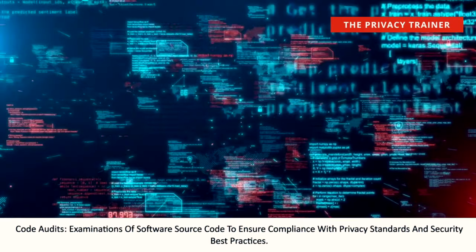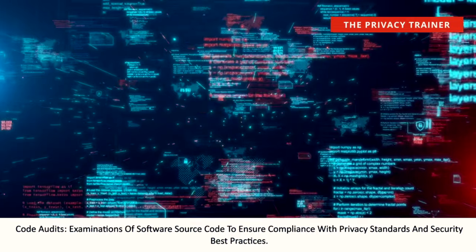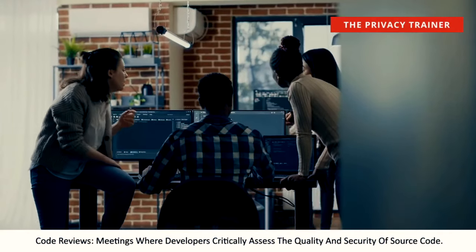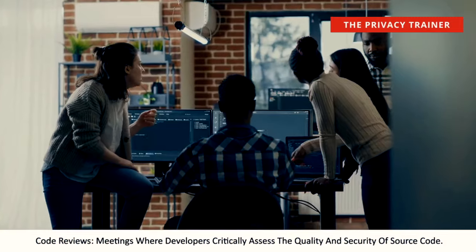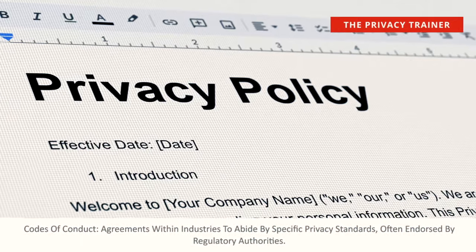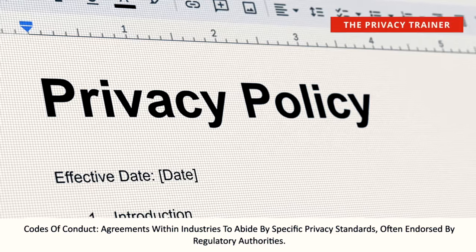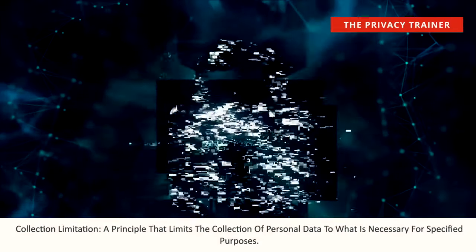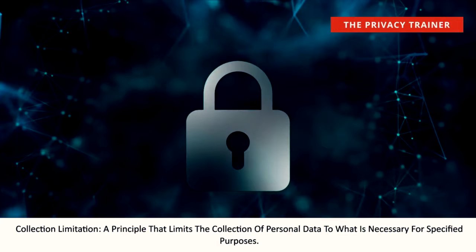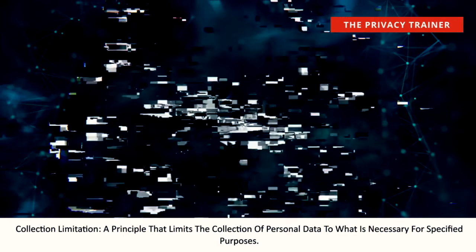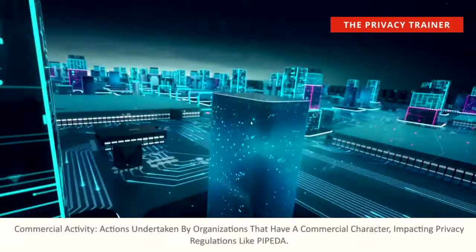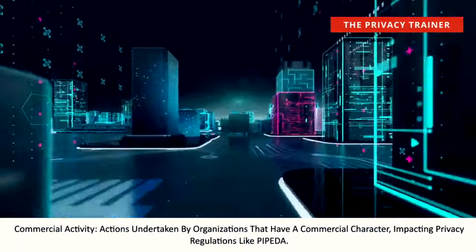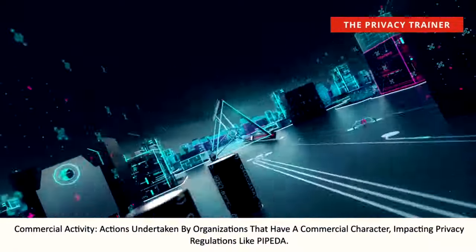Code audits. Examinations of software source code to ensure compliance with privacy standards and security best practices. Code reviews. Meetings where developers critically assess the quality and security of source code. Codes of conduct. Agreements within industries to abide by specific privacy standards, often endorsed by regulatory authorities. Collection limitation. A principle that limits the collection of personal data to what is necessary for specified purposes. Commercial activity. Actions undertaken by organizations that have a commercial character, impacting privacy regulations like PIPEDA.